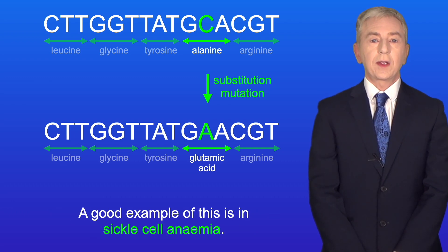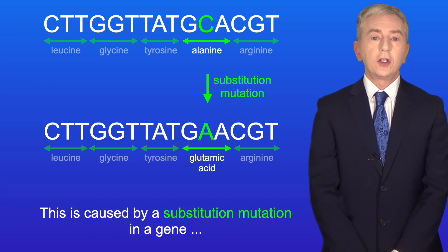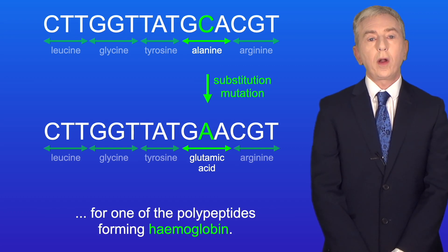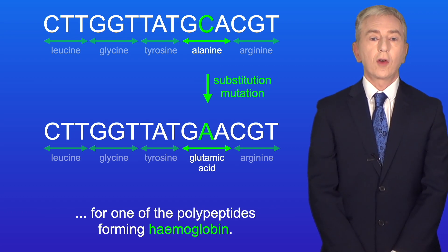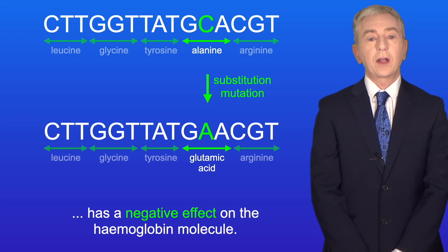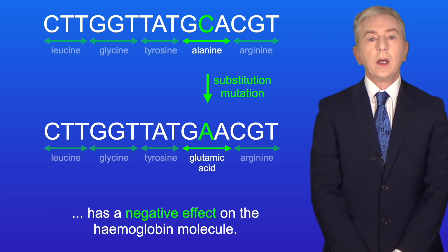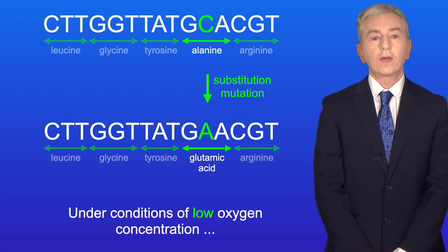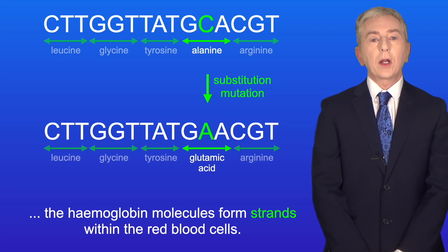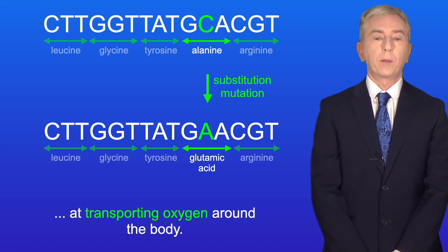A good example of this is in sickle cell anemia. This is caused by a substitution mutation in a gene for one of the polypeptides forming hemoglobin. In this case, the substitution mutation has a negative effect on the hemoglobin molecule. Under conditions of low oxygen concentration, the hemoglobin molecules form strands within the red blood cells, and this makes the red blood cells less effective at transporting oxygen around the body.